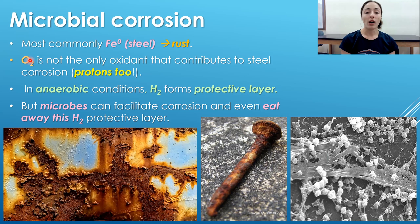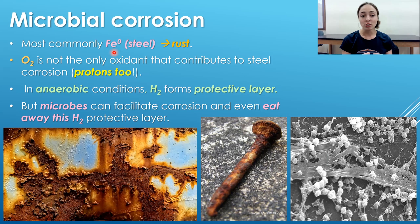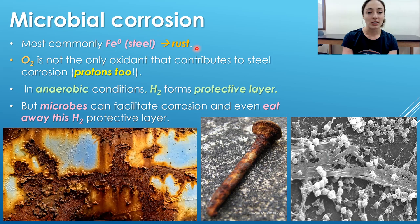Oxygen exposure can eventually cause rusting because oxygen is an oxidant for iron — it takes electrons away from the iron, making it become more oxidized. The more electrons you have, the more negatively charged and more reduced you are, so when oxygen accepts electrons from the iron, the iron becomes less negative and more oxidized. Therefore, oxygen or just air exposure can cause the oxidation of iron and rusting.